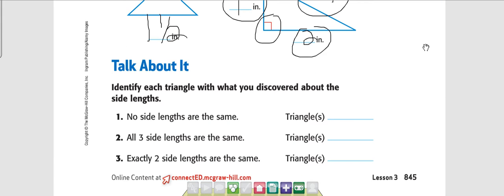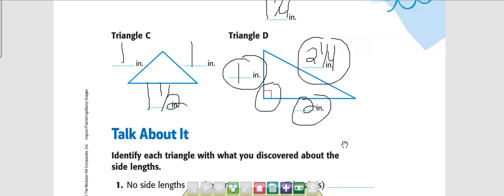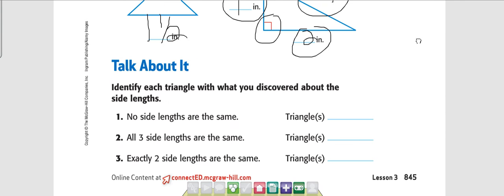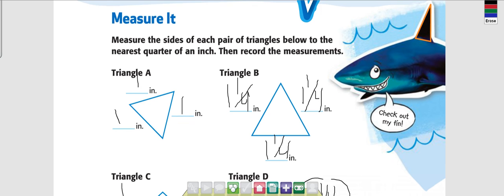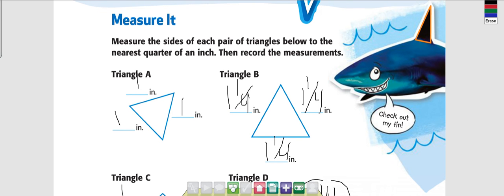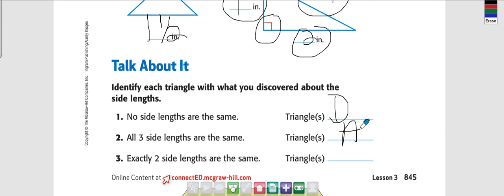Those sides are the same length, right. Which triangle does not have all the sides the same length? Triangle D — because triangle D has one inch, two and a quarter inch, and two inch — none of those sides are the same length. Which triangle has all three sides the same length? A and B — because A has all sides one inch, and B has all sides one and a quarter inch. Which triangle has exactly two sides that are the same length? Triangle C.